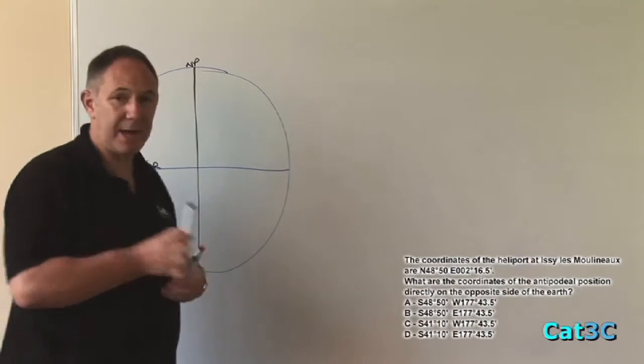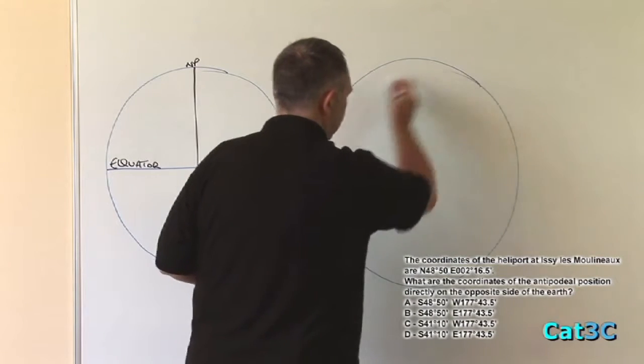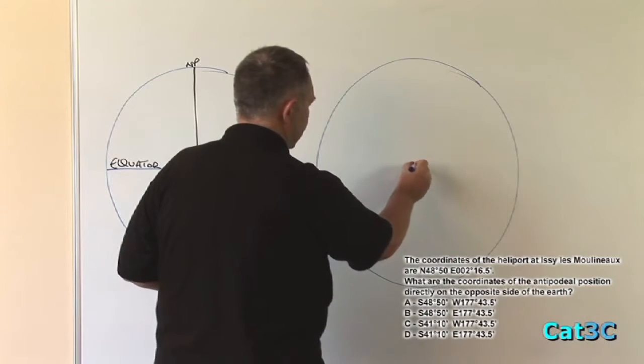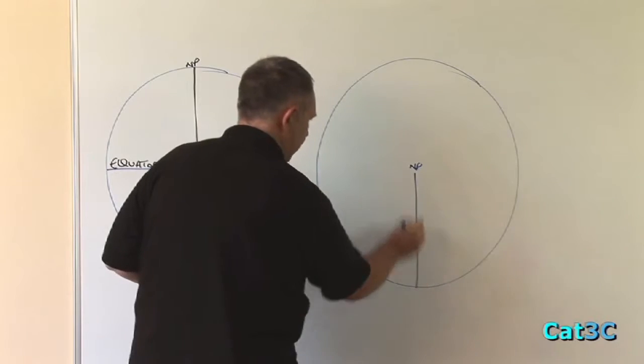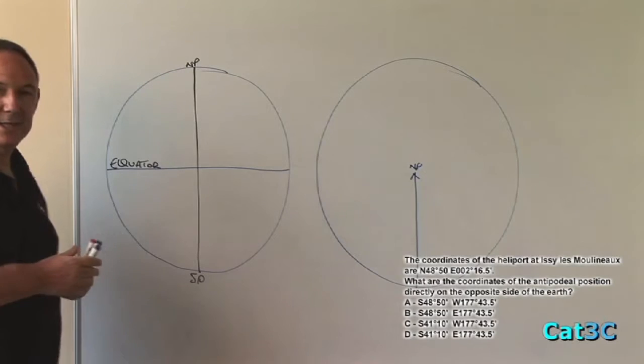Then the other view is a plan view of the earth from above the north pole. North pole is in the centre and the Greenwich Meridian runs up into the north pole. First of all, we look at the latitude.